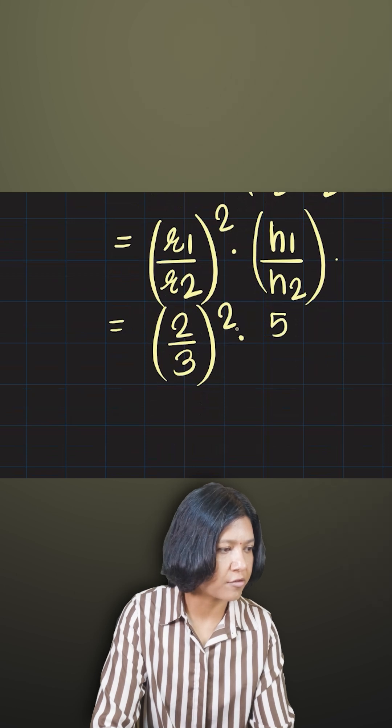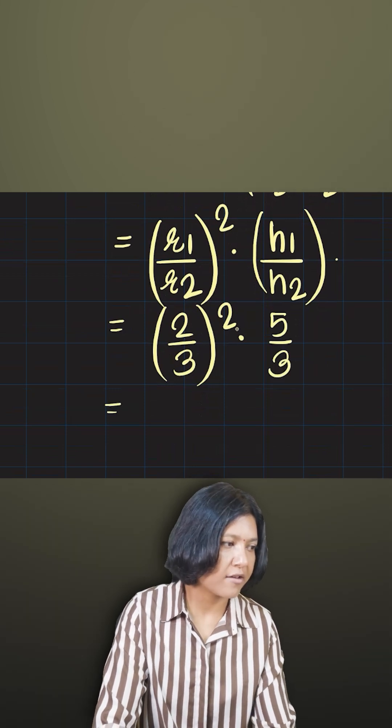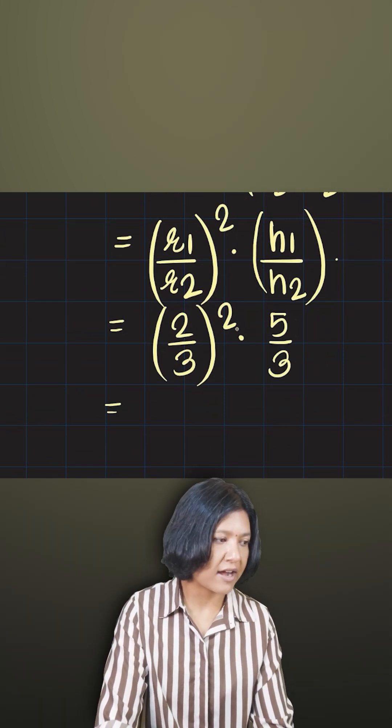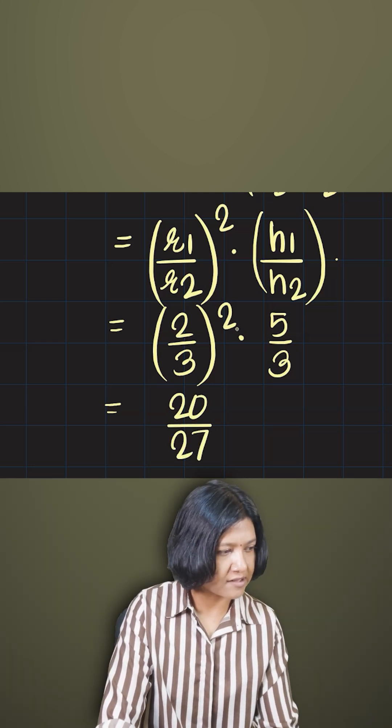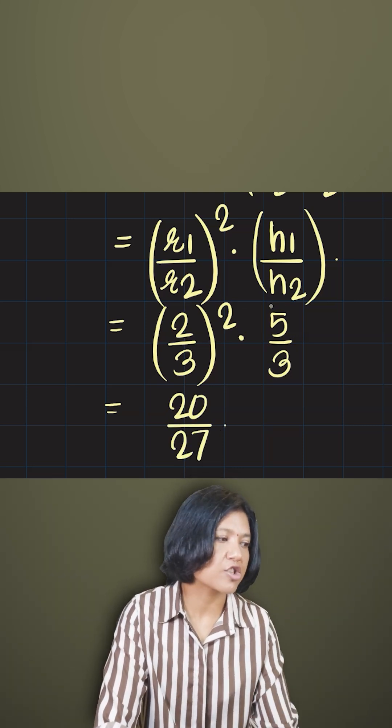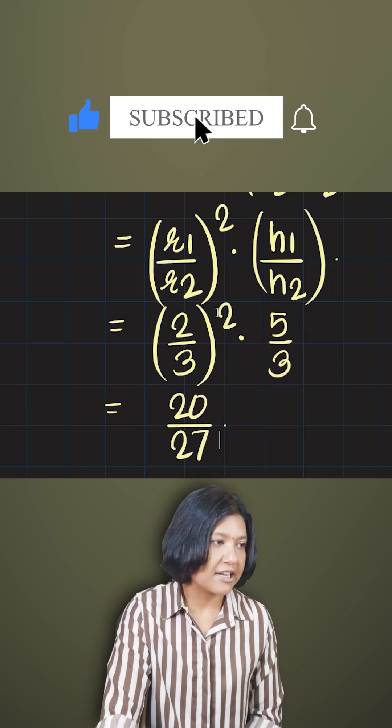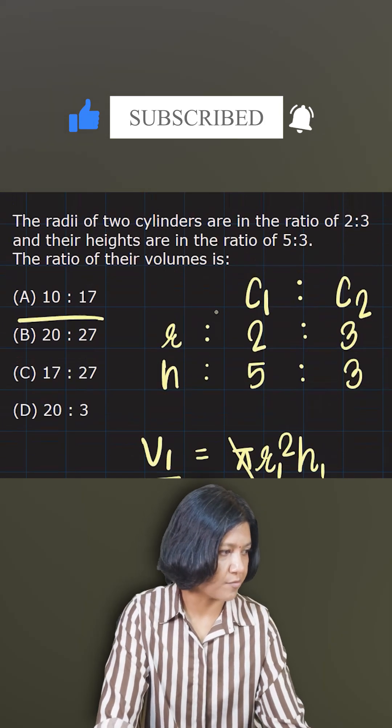So what happens now - you can square it. 2 square is 4 times 5 is 20. 3 square is 9 times 3 is 27. So I got the volume ratio as 20 is to 27, telling me that the answer is option B.